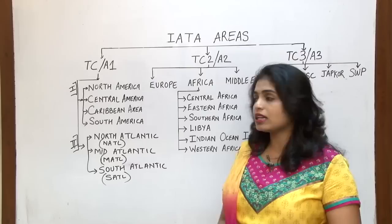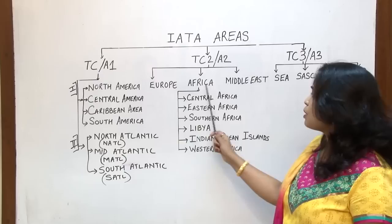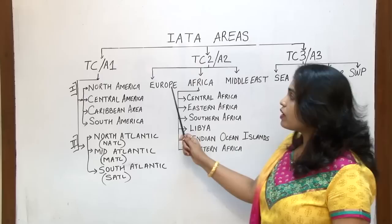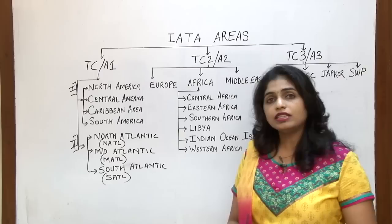Moving to IATA area 2 or TC2, we get three sub areas: Europe, Africa, and Middle East. Africa itself gets divided into six sub sections: Central Africa, Eastern Africa, Southern Africa, Libya, Indian Ocean Islands, and Western Africa.